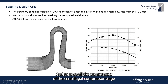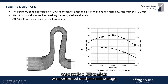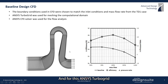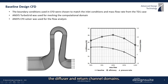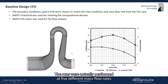Once all the components of the centrifugal compressor stage were ready, a CFD analysis was performed on the baseline stage to check the performance. ANSYS TurboGrid was used for the fully structured grid of the impeller, the diffuser, and return channel domains, and CFX was used for the flow analysis. The runs were performed at five different mass flow rates.